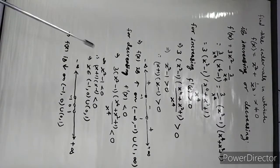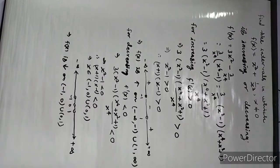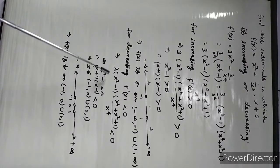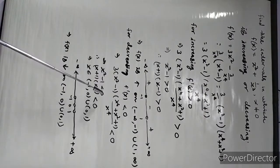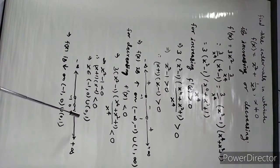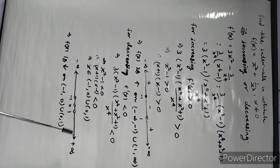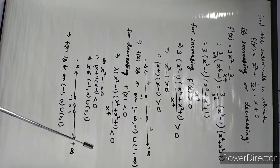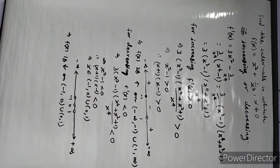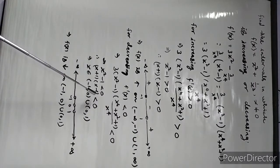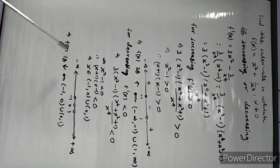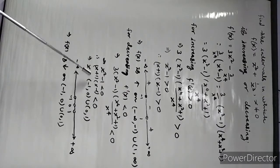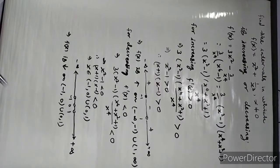For decreasing, put f'(x) < 0. So 3(x² - 1)(x⁴ + x² + 1) / x⁴ < 0. This implies that x² - 1 < 0, that is (x + 1)(x - 1) < 0.